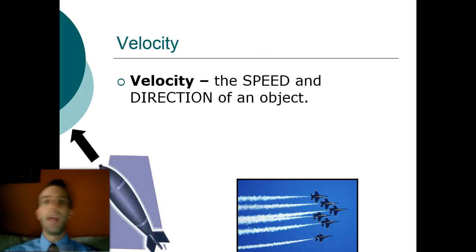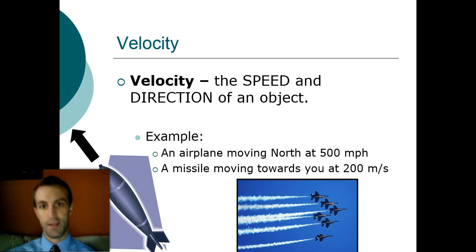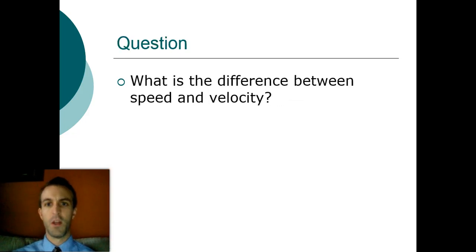Velocity, you take the speed and include a direction. So it's just distance over time, but what direction you were going in at the same time. For example, an airplane is moving north at 500 miles an hour, a missile is moving towards you at 200 meters a second, but you're Iron Man so you can get out of the way.